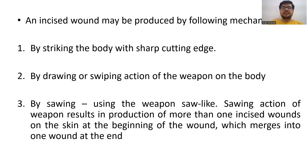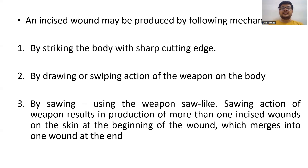An incised wound may be produced by the following mechanisms: first, by striking the body with a sharp cutting edge; by drawing or sweeping action of the weapon on the body; or by sawing action of heavily sharp cutting weapons. Sawing action results in production of more than one incised wound — multiple wounds are seen on the skin at the beginning which merge into one wound at the end. So sawing action ki vajah se wahan par multiple incisions dekhne ko milte hain jiske ends connected hote hain.